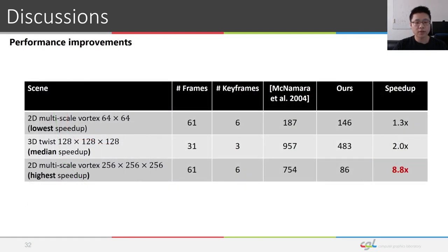Finally, the performance of our method for three of the examples are shown to compare with the method of McNamara et al. With the help of both strategies to reduce the optimization parameter domain, we reach a speed-up of up to 8.8 times.